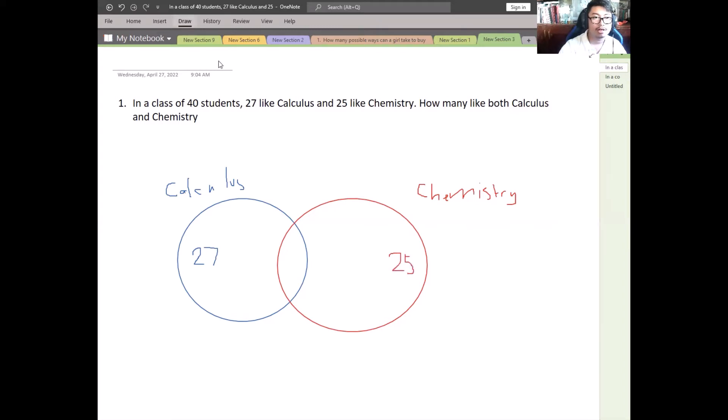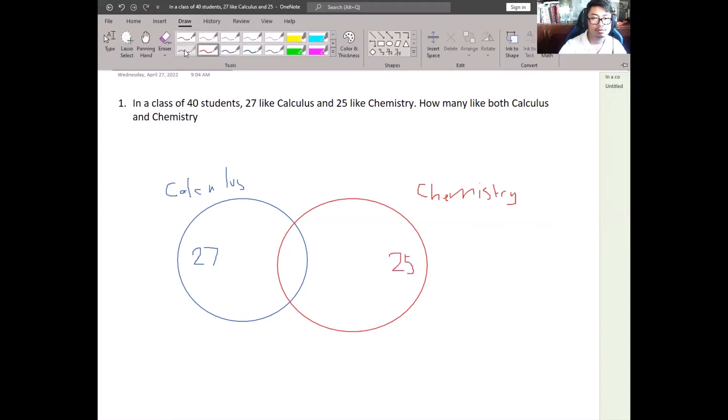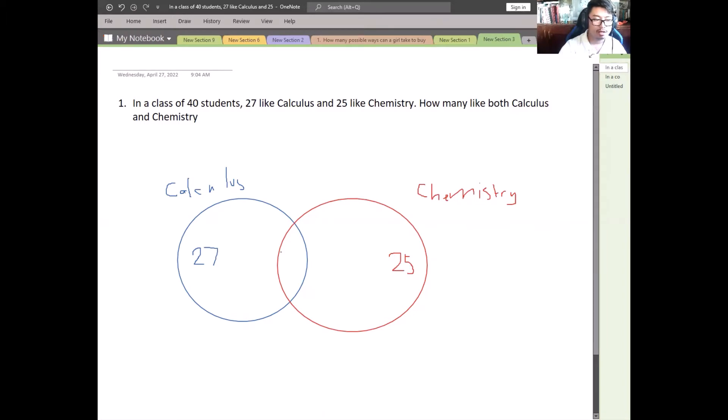So this is the unknown variable, which is the number of students who like both calculus and chemistry. So we will have negative x here, also here.